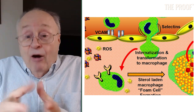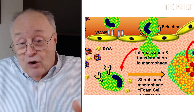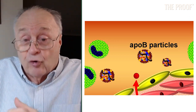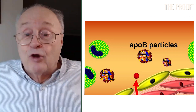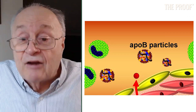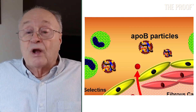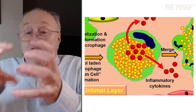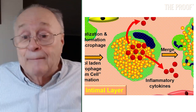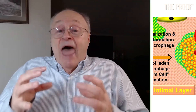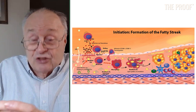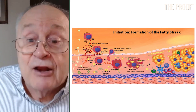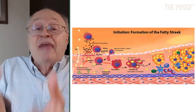Now, if that macrophage keeps internalizing huge numbers of ApoB cholesterol-carrying particles, before you know it the macrophage becomes super cholesterol-engorged. They're called foam cells because they look foamy under a microscope. And if you get a macrophage that turns into a foam cell and you get a few billion of those macrophages, that is plaque.